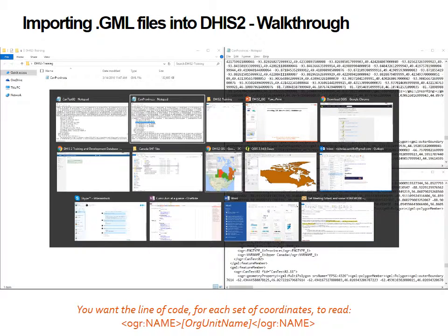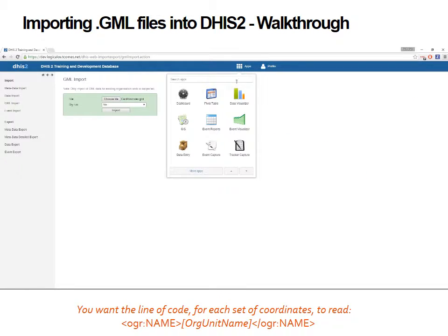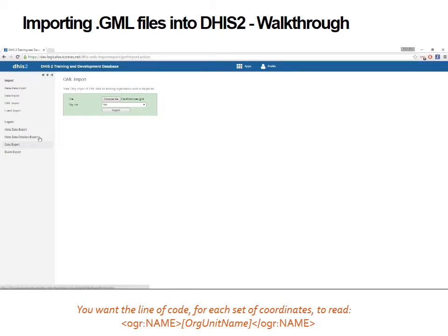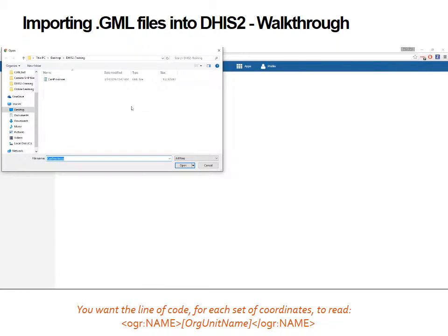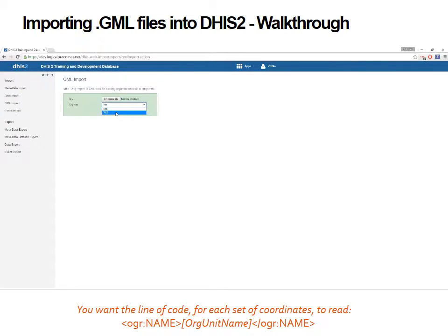Once I do that, I pop over to DHIS2 and go into the Import and Export app. I select GML import, and I'll see this screen where I choose my file — Canada provinces. We normally suggest you do a dry run first, or if you know exactly what you're doing and have already done your dry run, you can set it to no. Canada is a very large country so it's going to take a long time to import, but that is the process of making sure your GML file is going to connect to and be understood by your DHIS2 instance.